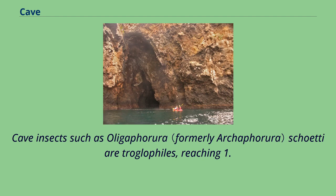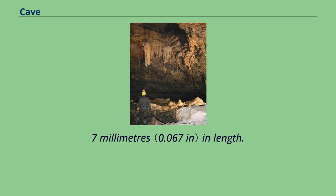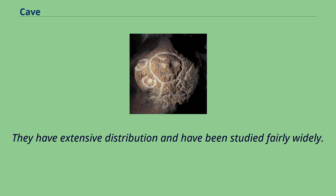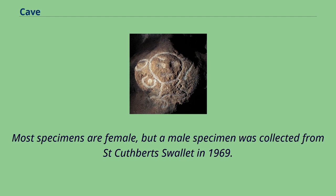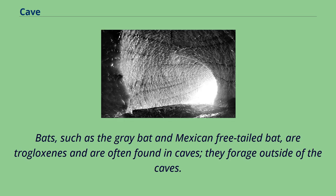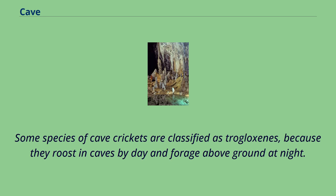Cave insects such as Oligaphorura schoetti are troglophiles, reaching 1.7 mm in length. They have extensive distribution and have been studied fairly widely. Most specimens are female, but a male specimen was collected from St. Cuthbert's Swallet in 1969. Bats, such as the gray bat and Mexican free-tailed bat, are trogloxenes and are often found in caves; they forage outside of the caves. Some species of cave crickets are classified as trogloxenes, because they roost in caves by day and forage above ground at night.